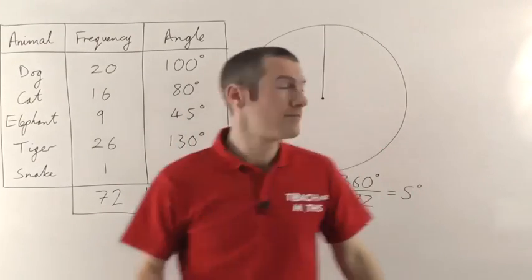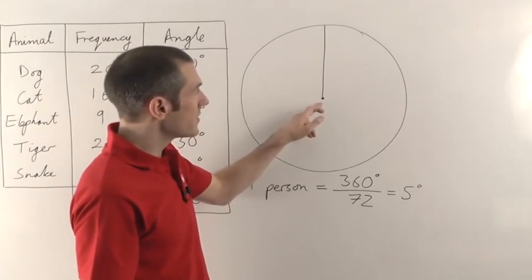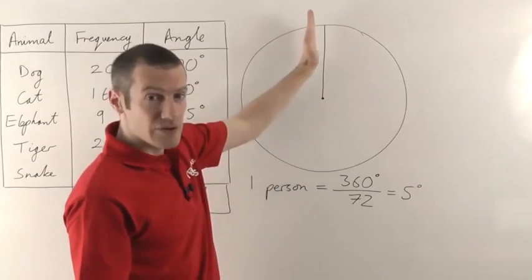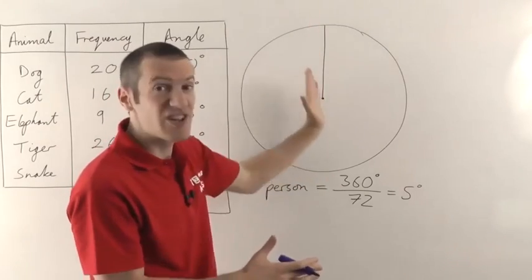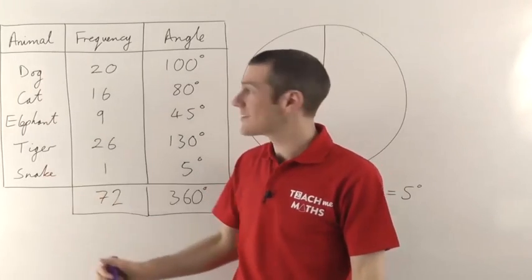Once you know the angles, you can start drawing your pie chart. Now as I say, the first thing you do is from the center line, draw a line that goes vertically straight up. You need a starting point, and you always take the straight up point as your starting point. And then just work through your different categories.